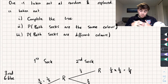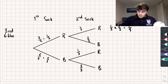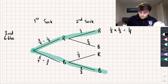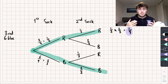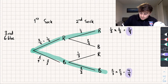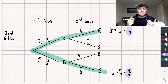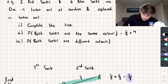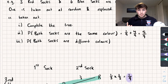The second part of the question asks for the probability that both socks are the same color. That means either red then red, or blue then blue. We already have P(red, red) = 1/9. For two blue socks: two thirds multiplied by two thirds gives four ninths. Adding those together: one ninth plus four ninths equals five ninths.